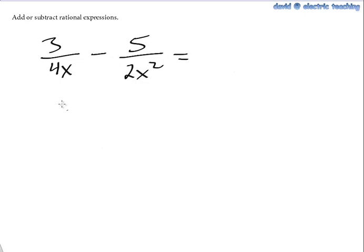Hi, David from Electric Teaching here, and I'd like to show you how to add or subtract rational expressions. Rational expressions mean that we have some sort of variable in a denominator position. These both have x's in the denominator, so these are rational expressions.